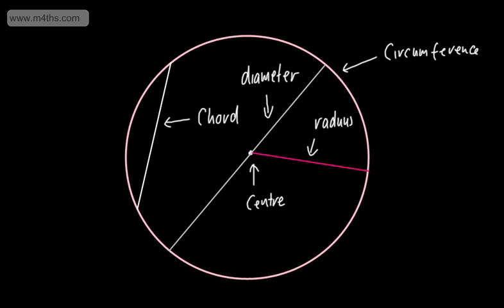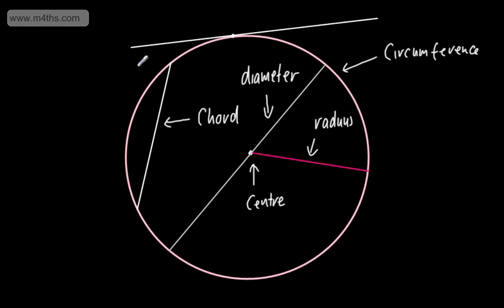We're now going to look at a tangent. A tangent touches the circumference of a circle — we have one point touching the circumference. That is an example of a tangent. If you want to think about this as a barrel with a plank on, that is an example of a tangent.